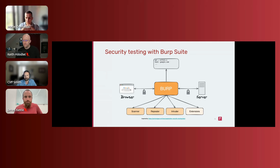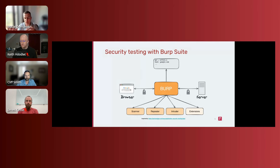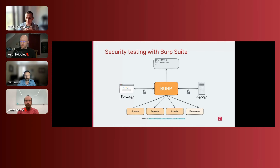Generally, Burp is an HTTP interception proxy that sits between your browser and the remote server. Requests from your browser are sent to the Burp proxy server listening on localhost, and Burp takes all those requests and responses and provides several features that facilitate security testing. The ones we're going to discuss today are Scanner, Repeater, Intruder, and several extensions. For those who want a ground-up introduction, check out our chapter at appsec.guide.